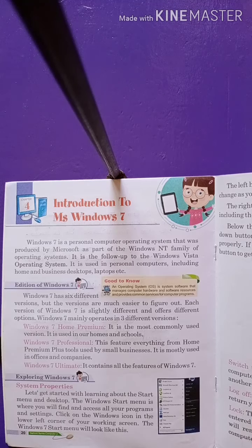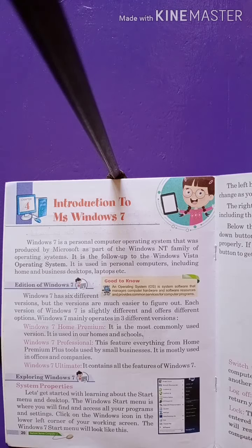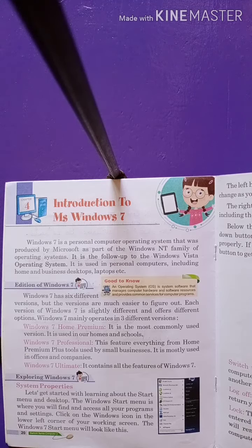Now let's explore Windows 7 — system properties and the Start Menu of the desktop. The Windows Start Menu is where we find access to all programs. जब हम Start button को दबाते हैं, हमारे जितने भी programs हैं वो हमें दिख जाते हैं।